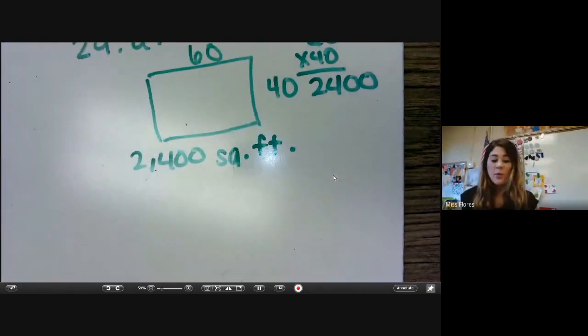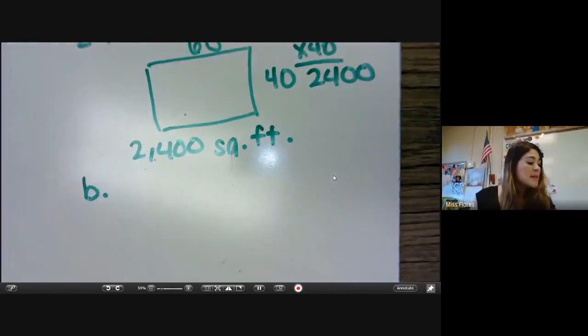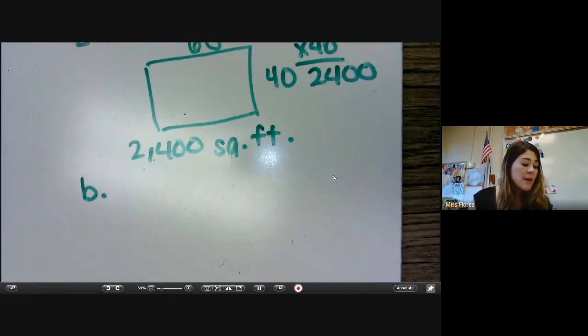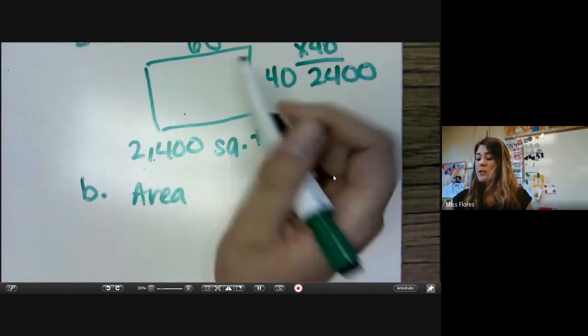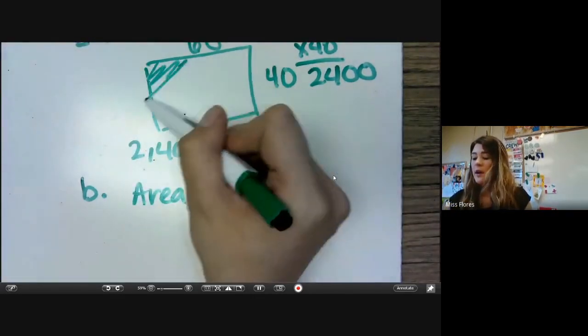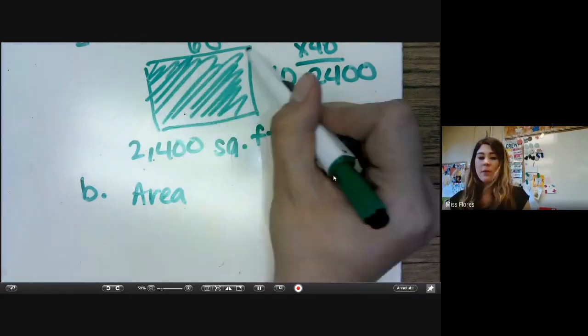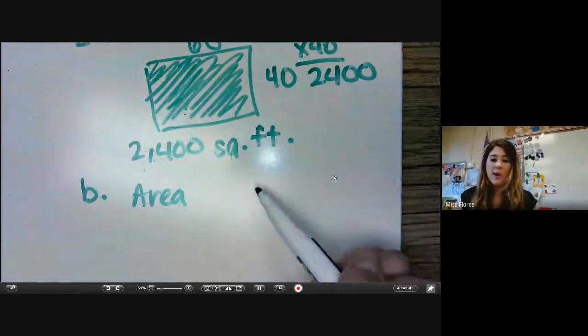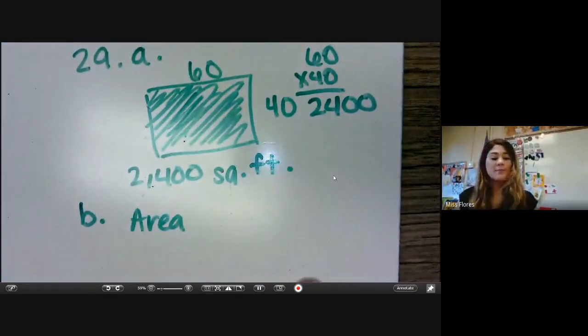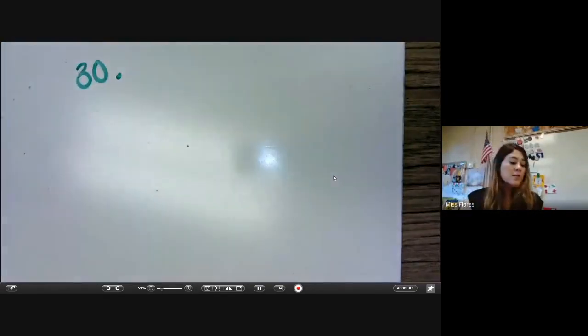What about B? It says, is this problem about area or perimeter? How do you know? It is about area because we need to know, they're asking about all the space that's in between. They're not asking about the outside of it. They're asking about all the space in between. So that's why it is about area. And last but not least, we're going to do number 30.